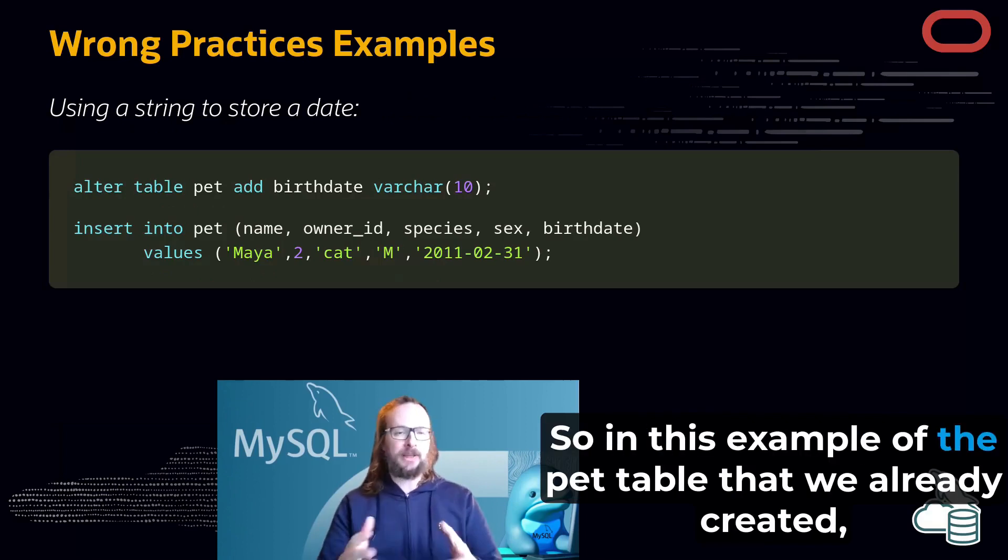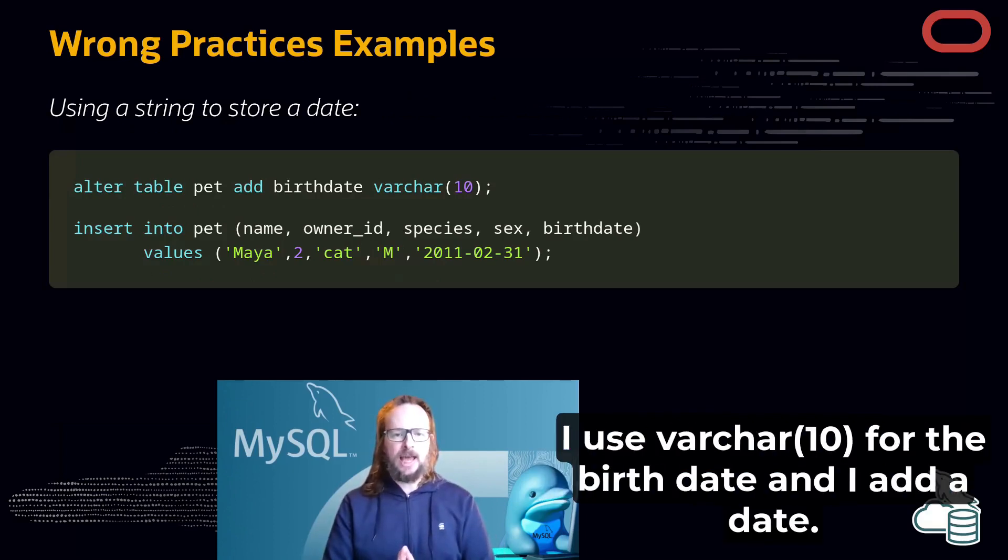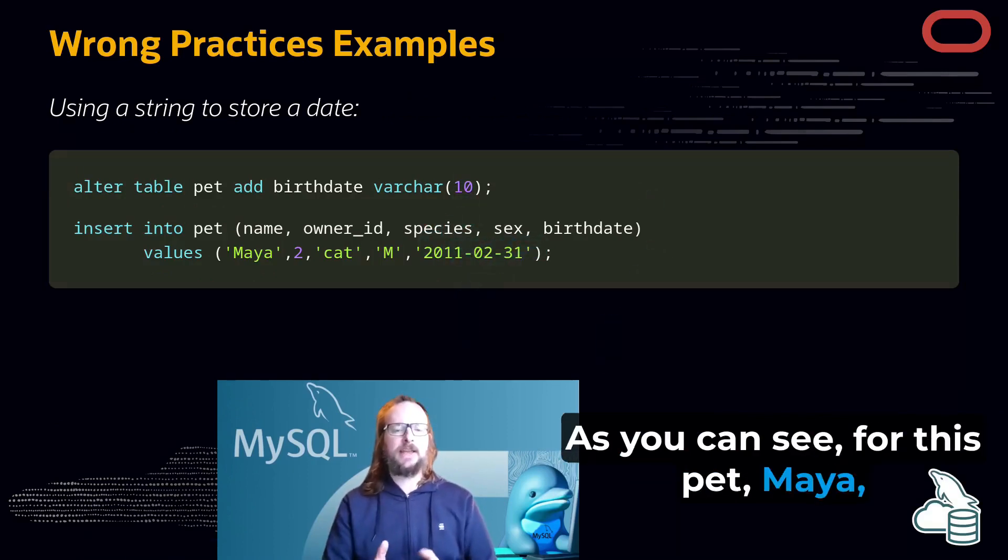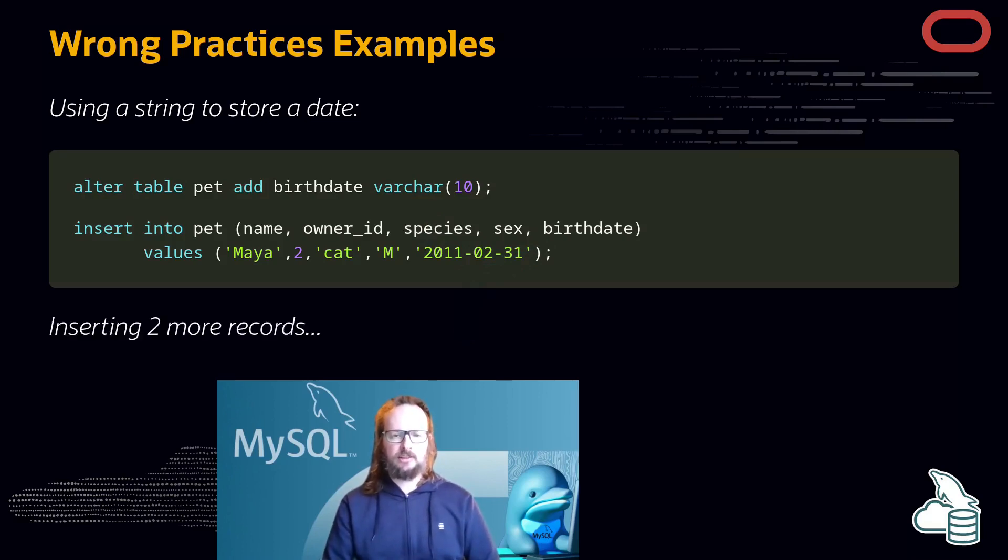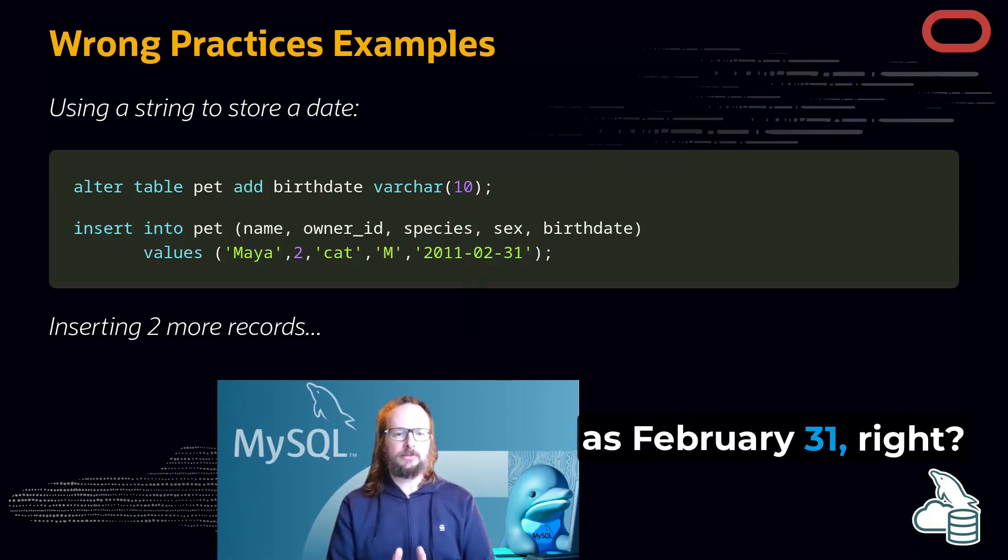So in this example of the pet table that we already created, I'm using varchar 10 for the birthday, and I add a date. As you can see, for this pet Maya, I was able to create the birth date as February 31, right?